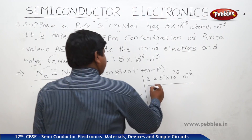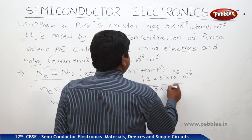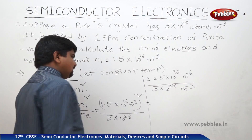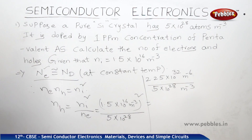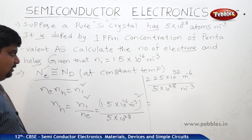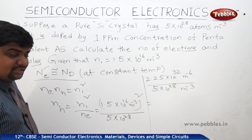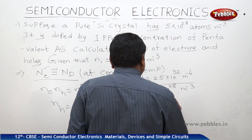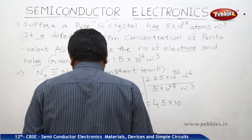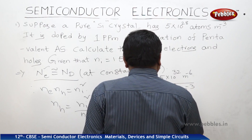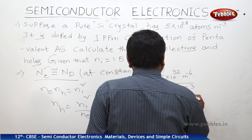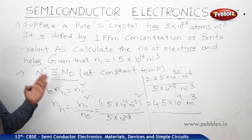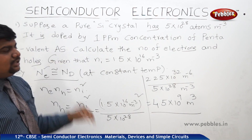Dividing by 5×10²⁸ m⁻³, if you do the calculation you will get 4.5×10⁴ m⁻³. In other words, we can write 4.5×10⁹ per meter cube. So these many holes are there. At constant temperature, the number of electrons is equal to the number density. This is how we find the number of electrons and number of holes.